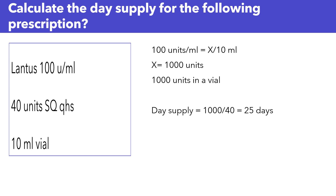What is the formula to calculate the day supply? First, you have to find the total number of units that you're dispensing, divided by the total number of units taken in one day. You know that you're dispensing a 10 ml vial.